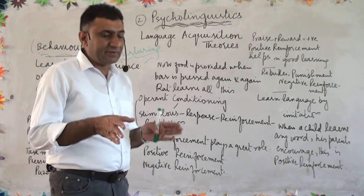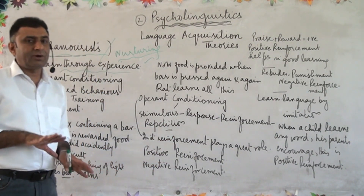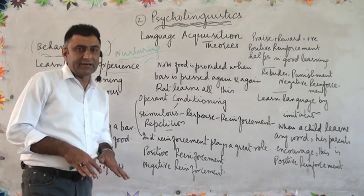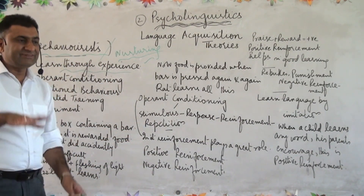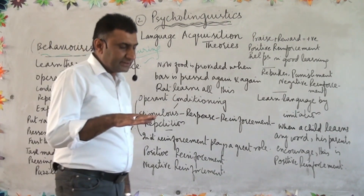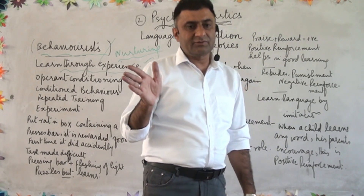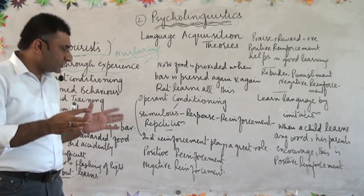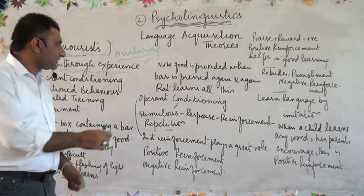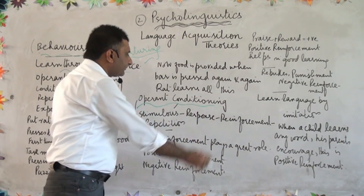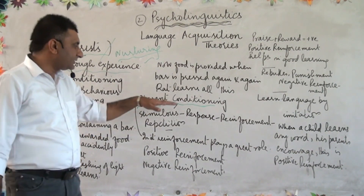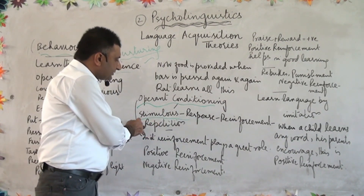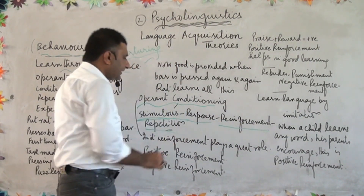The rat became aware that touching the bar repeatedly would eventually provide food. There were conditions outside that it was learning from. This process is called operant conditioning, and it is described through a diagram: there is stimulus, then response, then reinforcement, and then repetition. This model explains how children learn language.